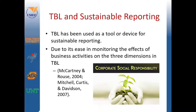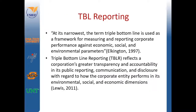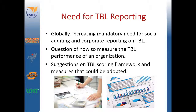The triple bottom line has been used as a tool for sustainable reporting due to its ease in monitoring the effects of business activities on the three dimensions of the triple bottom line. As Elkington stated in 1997, at its narrowest, the term triple bottom line is used as a framework for measuring and reporting corporate performance against economic, social, and environmental parameters. Triple bottom line reflects a corporation's greater transparency and accountability in its public reporting, communication, and disclosure with regard to how the corporate entity performs in its environmental, social, and economic dimensions. Globally, there is increasing mandatory need for social auditing and corporate reporting on triple bottom line.